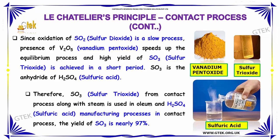Sulfur trioxide is the anhydride of sulfuric acid. Therefore, sulfur trioxide from the Contact Process along with steam is used in oleum and sulfuric acid manufacturing. In the Contact Process, the yield of SO₃ is nearly 97%.